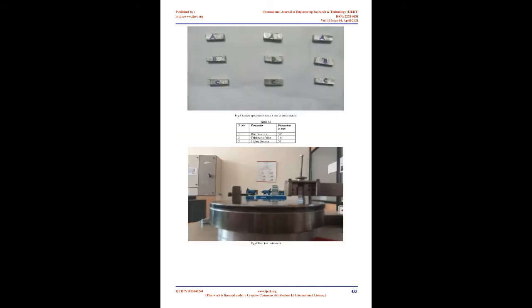Stir casting is one of the liquid metallurgy techniques for producing metal matrix composites. Nano-size SiC particulates ranging from 50 to 100 microns may give better results. Graphite and alumina content can be kept limited while SiC can be varied in steps of 0.5%. The resulting composite may show combined results of SiC, alumina, and graphite. A hybrid composite is to be made, with the composition of reinforcements differing to obtain better composite properties.